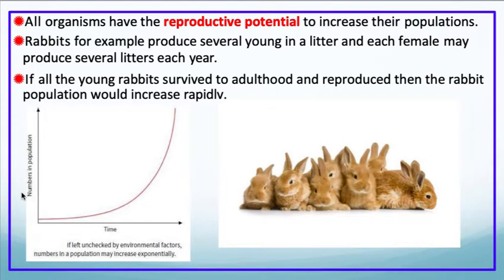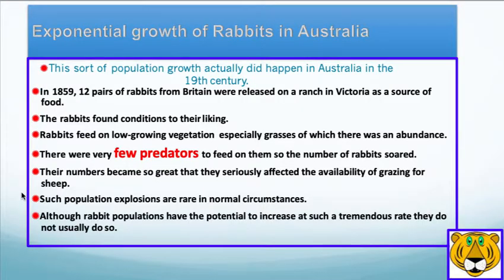All organisms have the reproductive potential to increase their population. Rabbits, for example, produce several young in a litter, and each female may produce several litters each year. If all the young rabbits survived to adulthood and also reproduced, the rabbit population would increase rapidly. We saw this in Australia in the 19th century. In 1859, 12 pairs of rabbits from Britain were released in Victoria as a source of food for farmers. The rabbits found conditions to their liking — it was a new environment with few predators and lots of food. Their numbers became so great that they seriously affected the availability of grass for sheep and other wild animals.